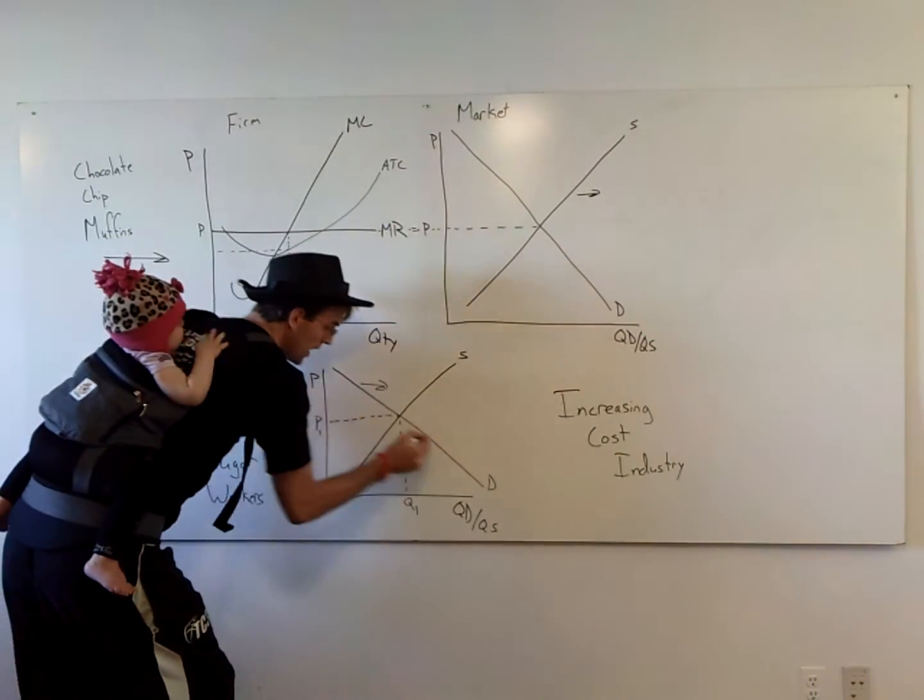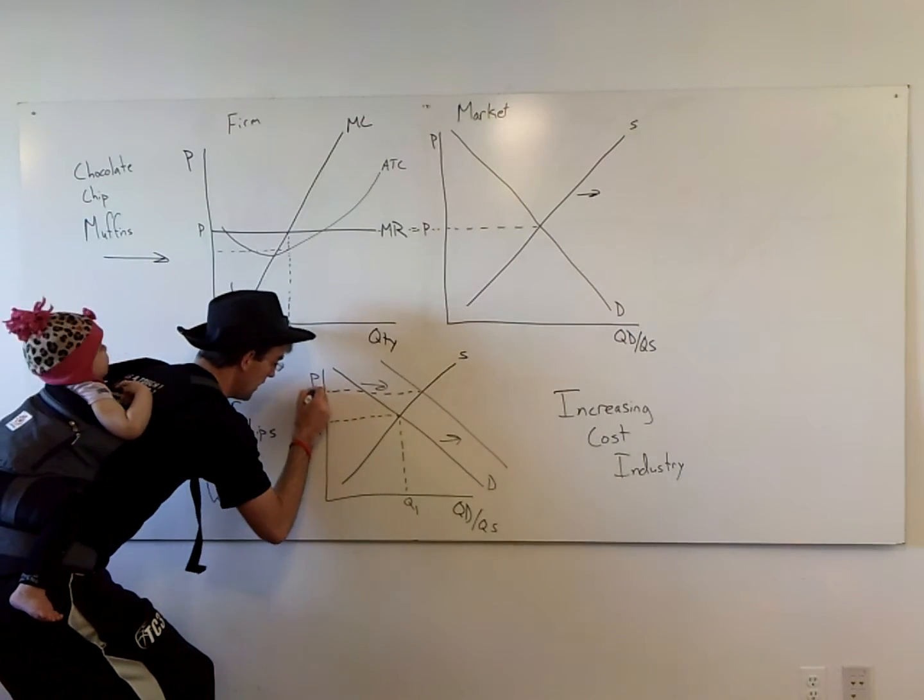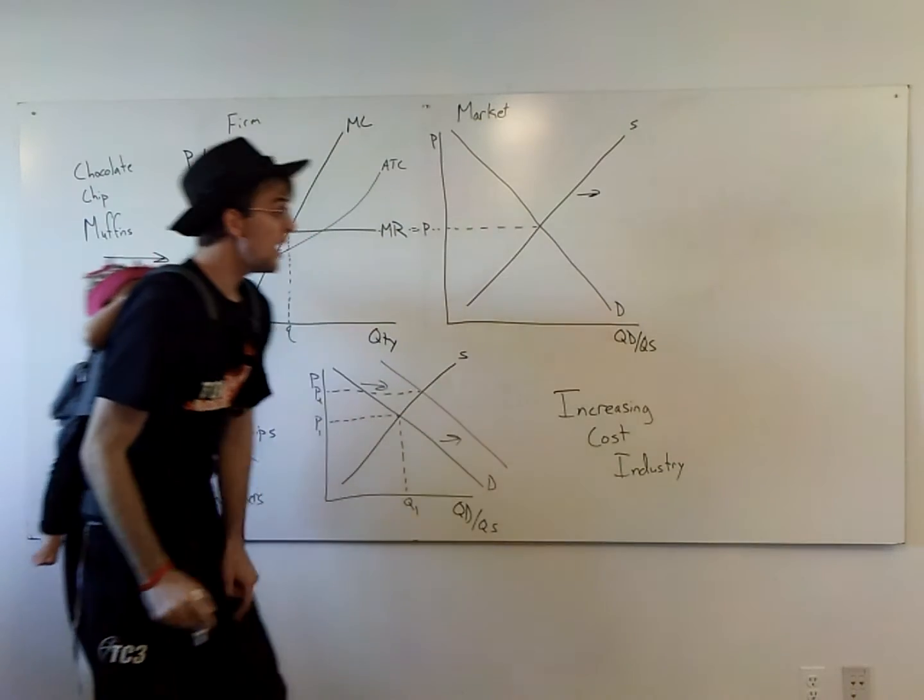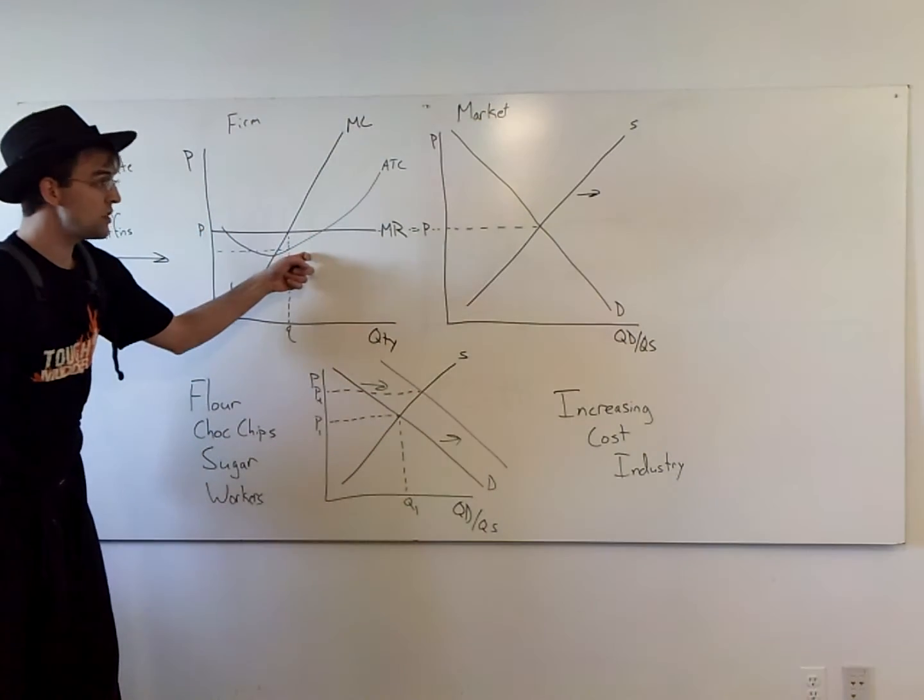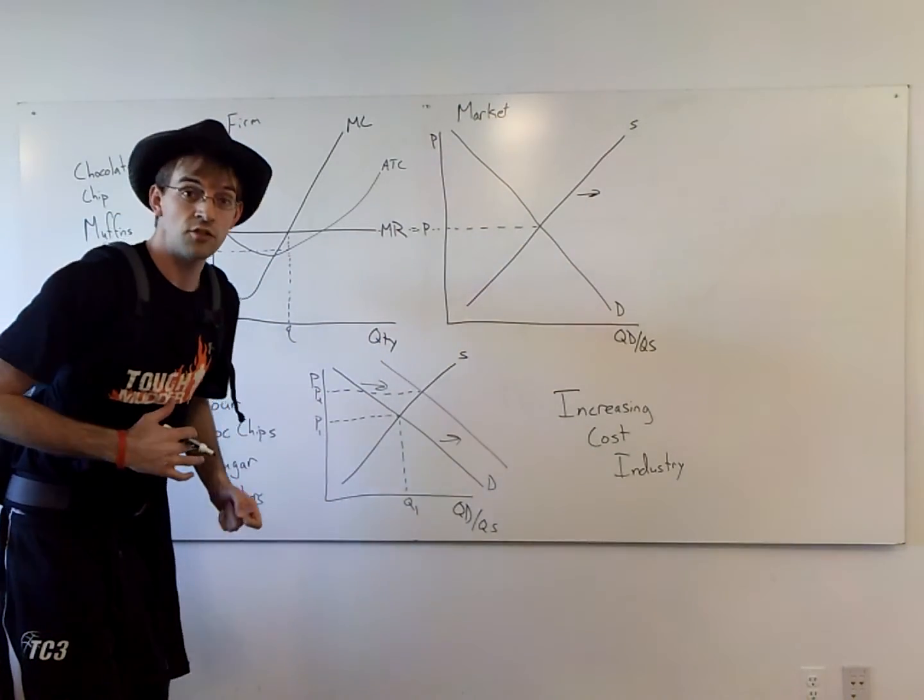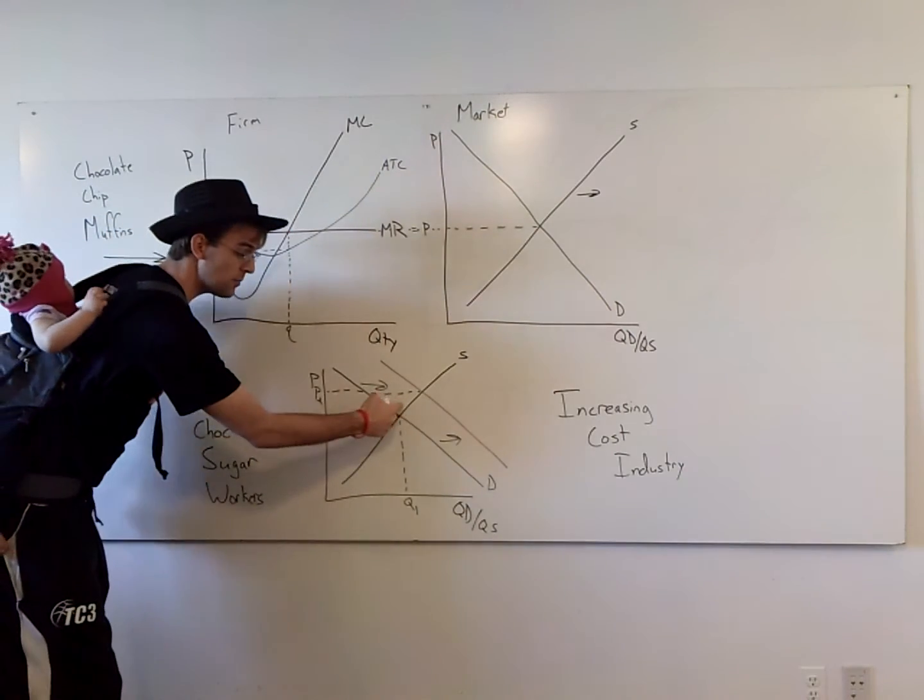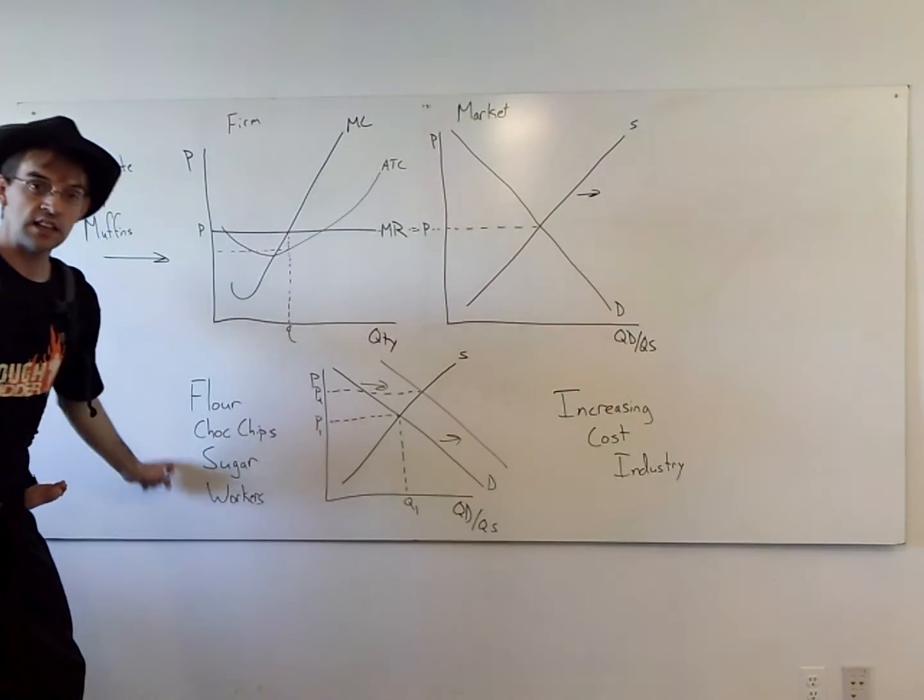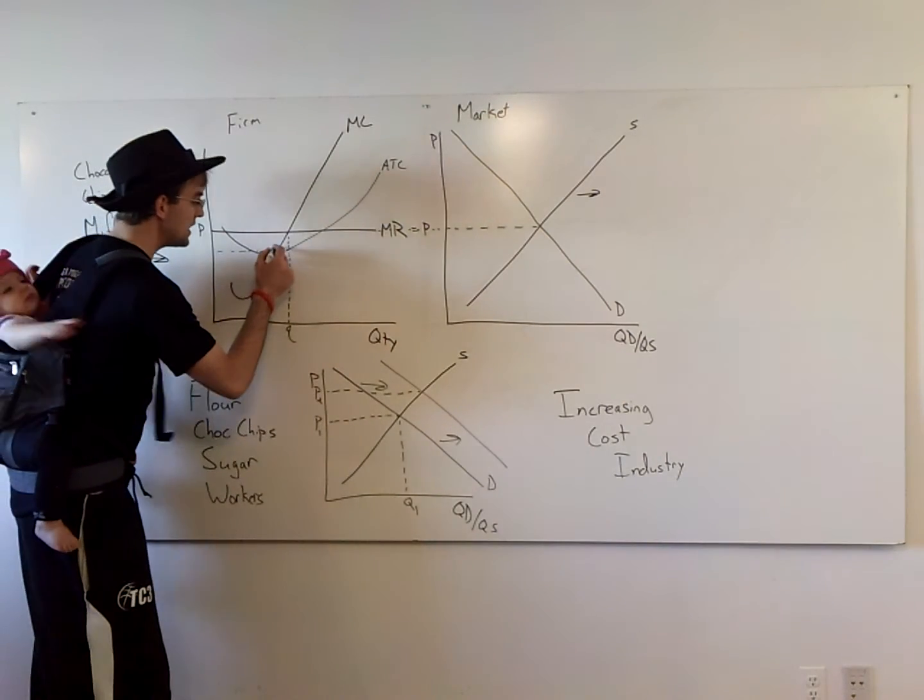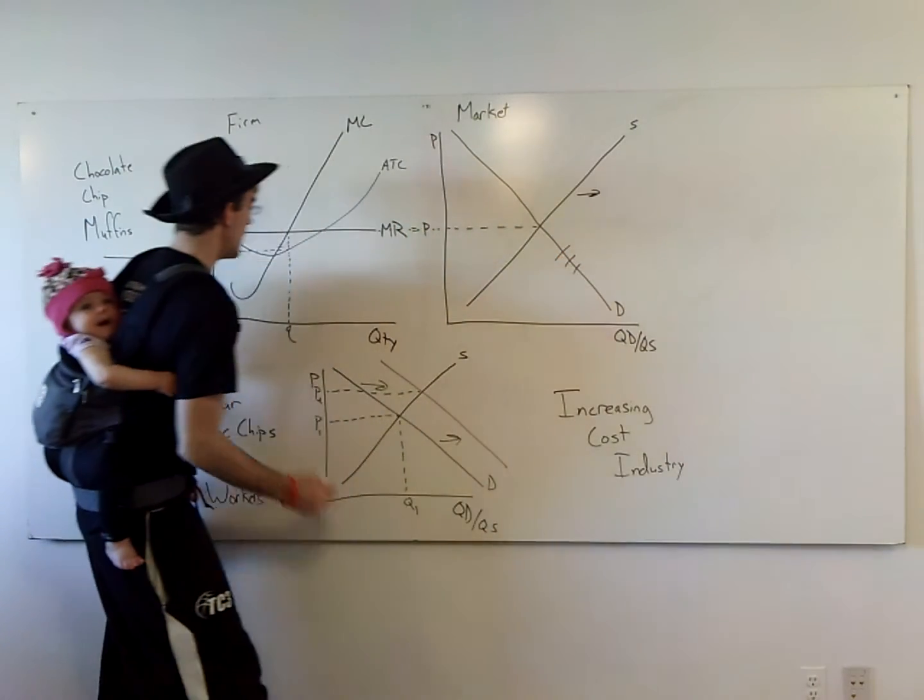So if we move our demand curve to the right here, notice that our price has gone up. This is what we call an increasing cost industry. If the price of these things goes up, notice what changes for this firm. The costs are going to start to go up. We saw this in class. There was a question about what was going to happen in your ATC curve. Well, it's going to start to inch up now because they have to pay more for the things that they need to make their muffins.